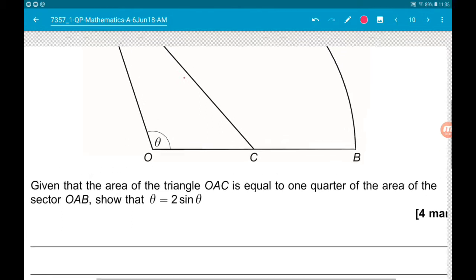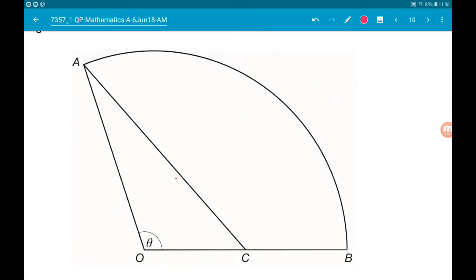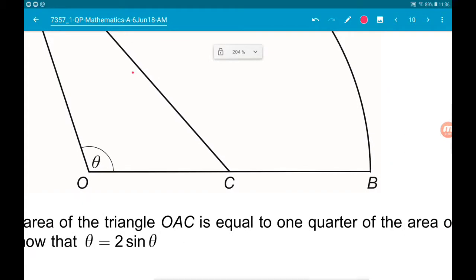Okay, so basically, find the area of the triangle, find the area of the sector, and then do some magic. So, first up, we know that C is the midpoint of O, B.